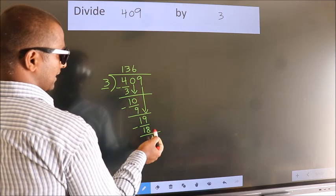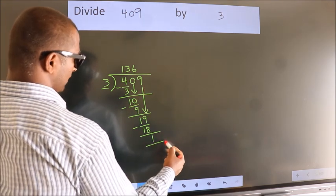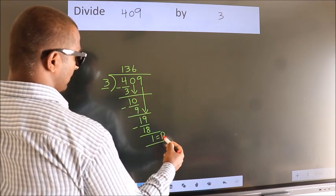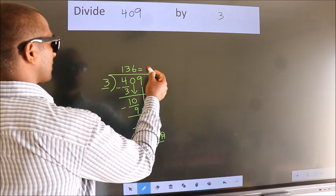No more numbers to bring it down. So we stop here. This is our remainder. This is our quotient.